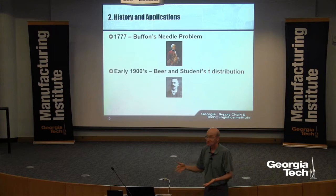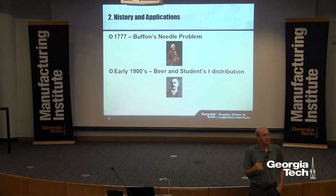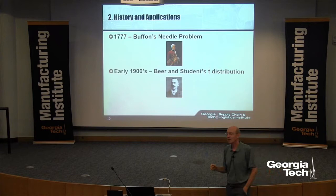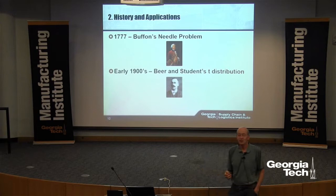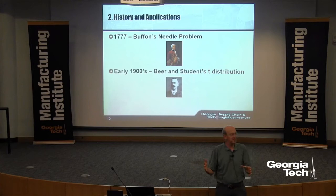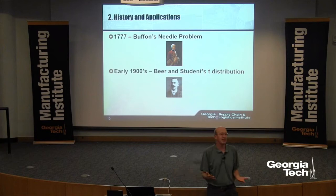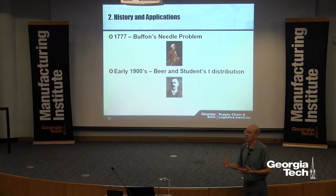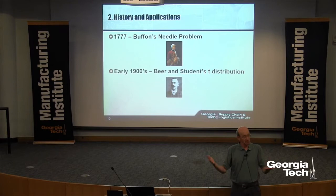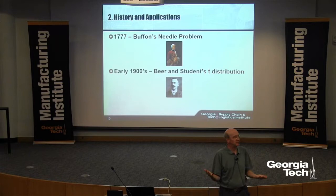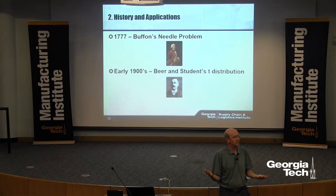Gossett discovered what we now know as the t-distribution. He wanted to publish it, but the beer company wouldn't allow it because it would give away their competitive advantage. So he published under the pseudonym 'Student' — that's where that comes from. He couldn't use beer examples, so instead he took measurements — middle finger lengths of British prisoners — put them in a hat, and started taking out random samples. From those random samples, he got histograms that look like what we now know as the t-distribution. He was basically doing a simulation.